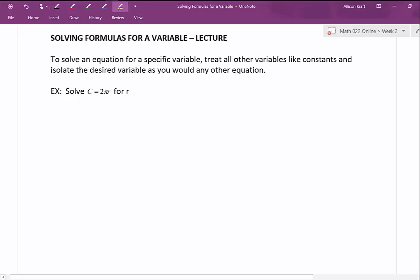In our first example, we want to solve the equation C equals 2πr for r. Now, I mentioned that we should treat all other variables like constants and solve like normal.